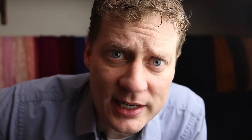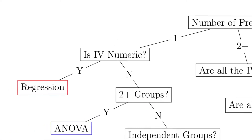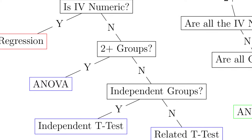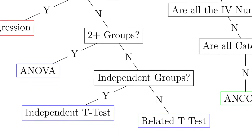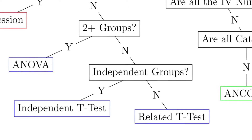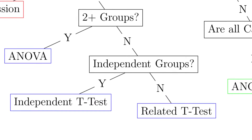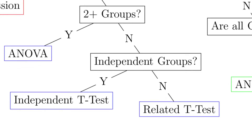You don't have to memorize this now — we're going to go more in depth later. In the traditional stats class, they make you memorize a convoluted complicated decision tree: how many predictors do you have? Is it one? Is your IV numeric? If yes, then regression. If no, then is it two or more groups? If yes, then ANOVA. If no, are the groups independent? If yes, independent t-test. If no, then related t-test.